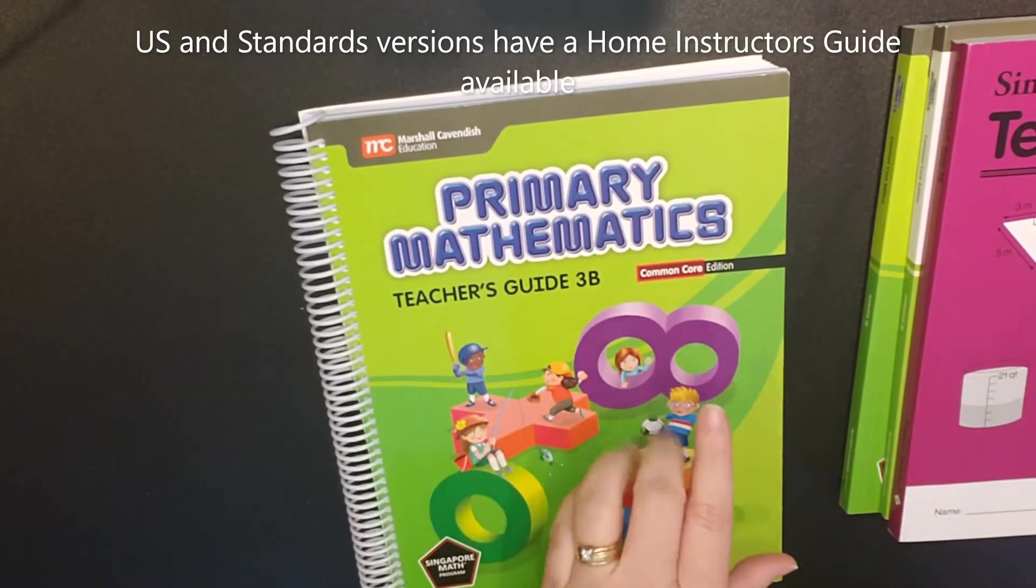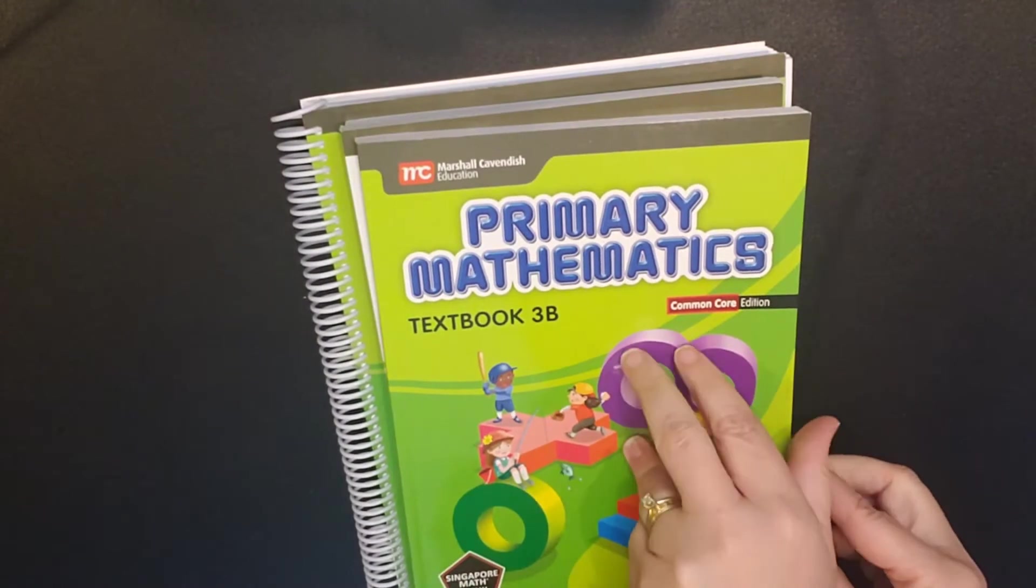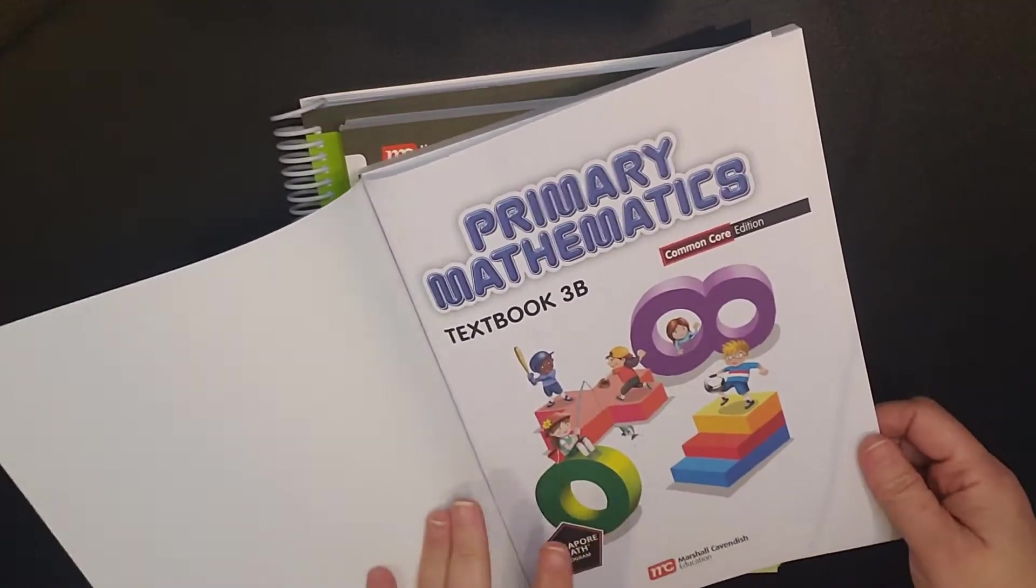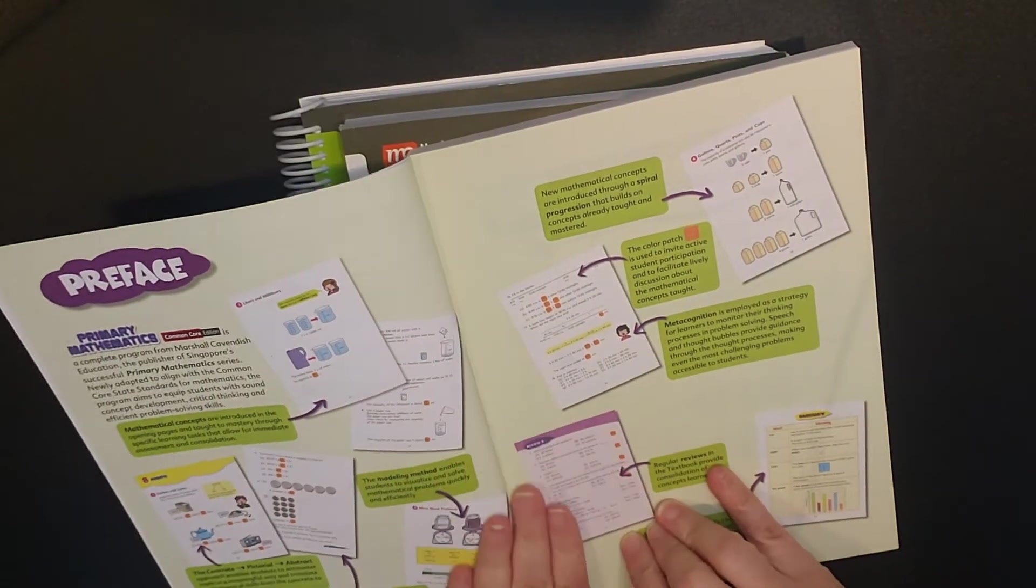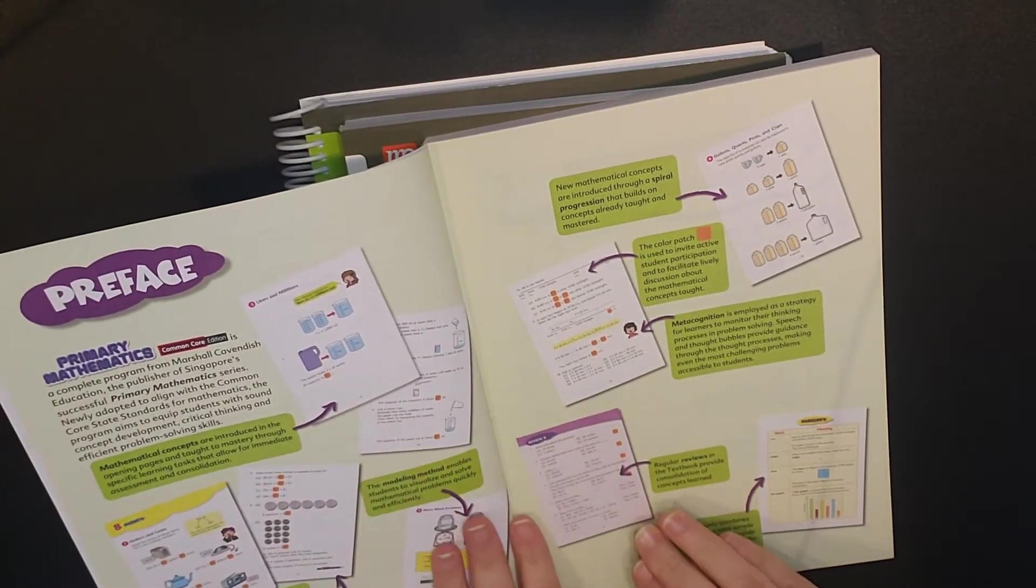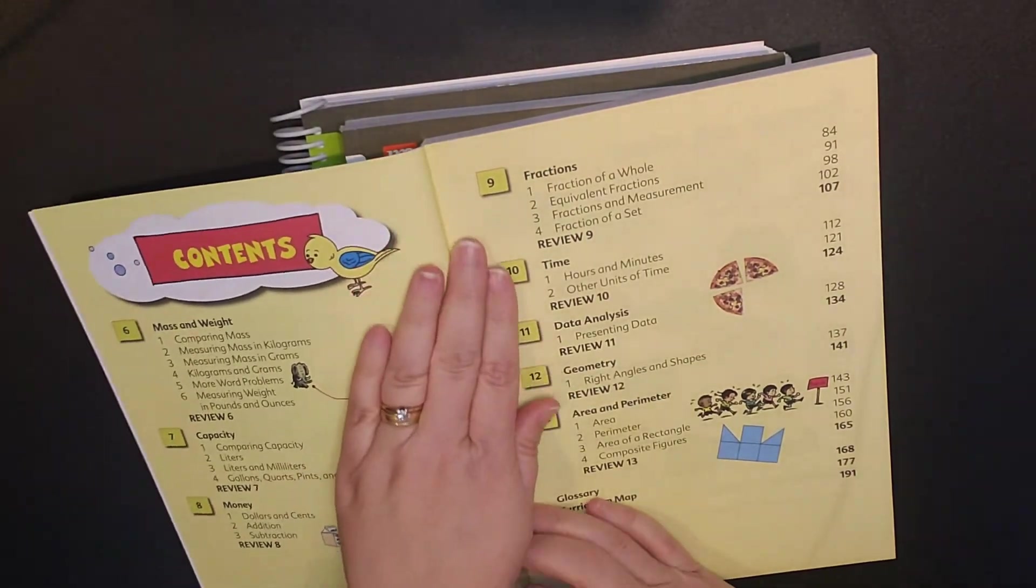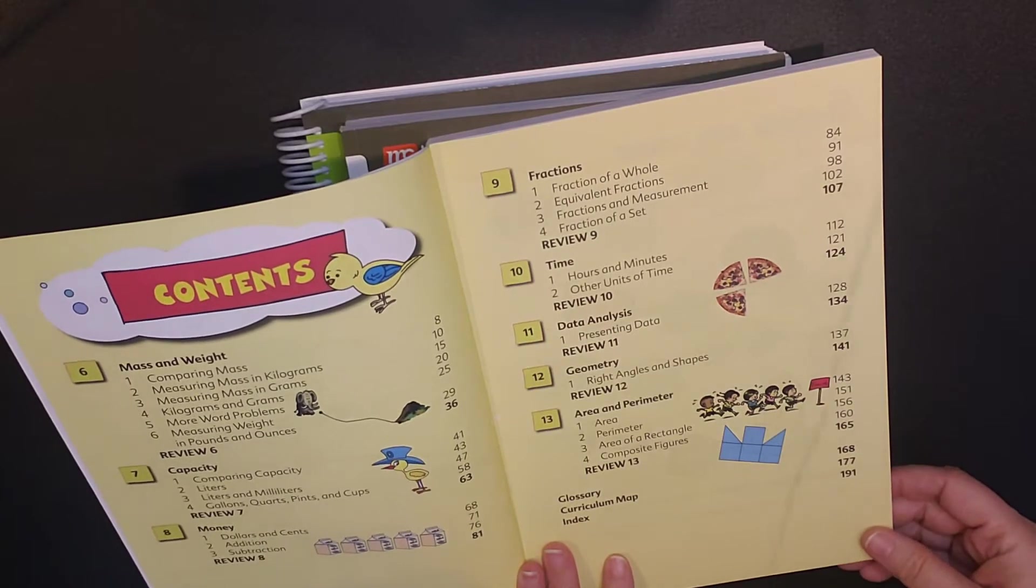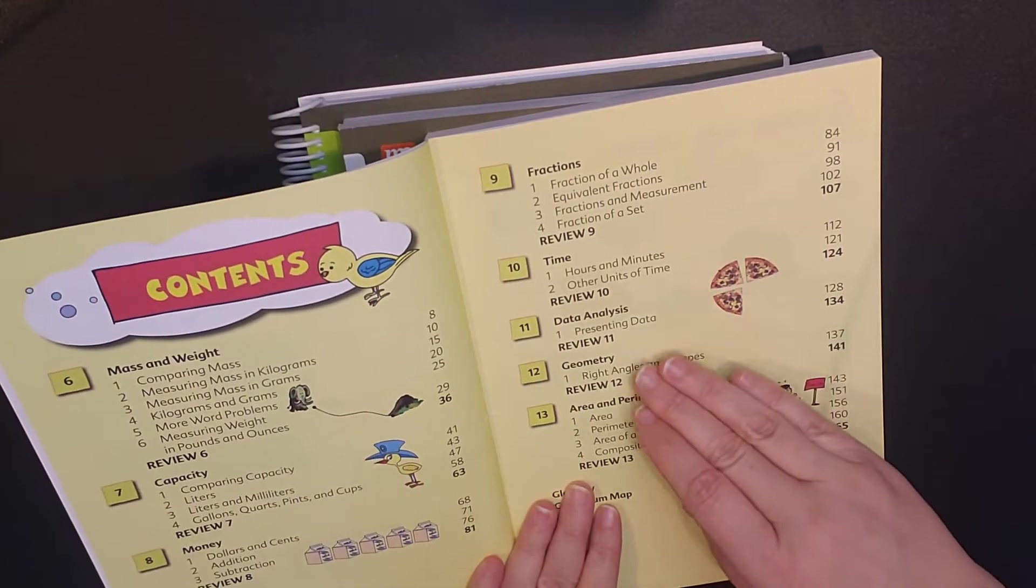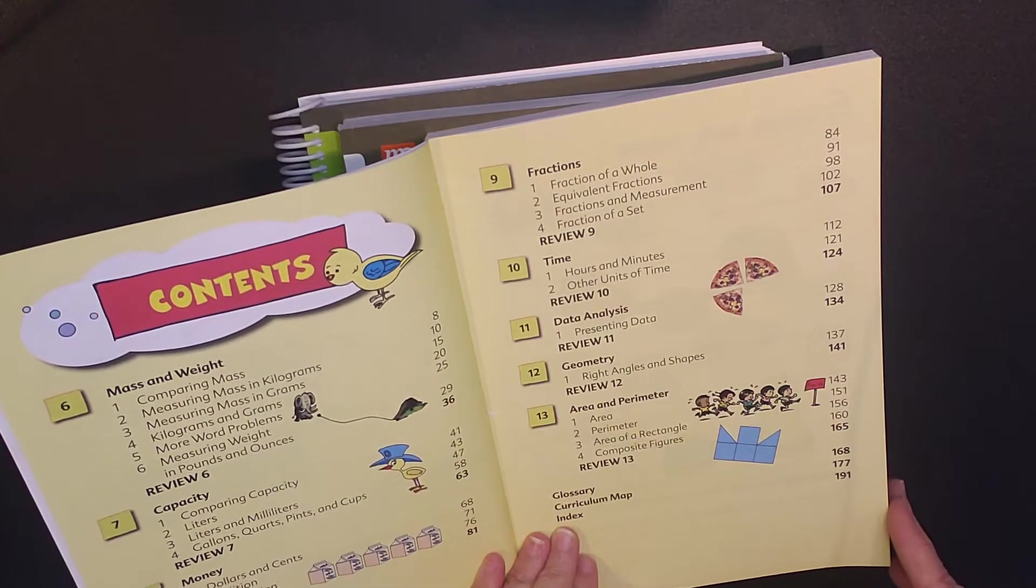Now for Common Core, they will have a teacher's guide. So the textbook is truly what you will be teaching out of. It walks through what each part of the textbook is. And then here's our table of contents. Remember, this is for the second half of third grade.